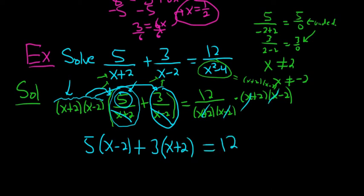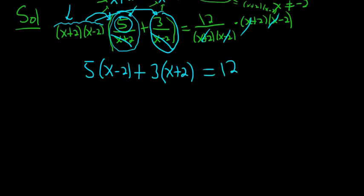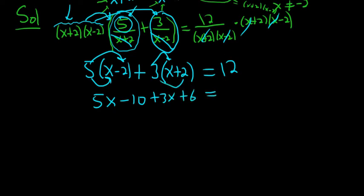So now we just distribute and collect like terms. We have 5 times x is 5x, 5 times -2 is -10, 3 times x is 3x, 3 times 2 is 6, and this is equal to 12.